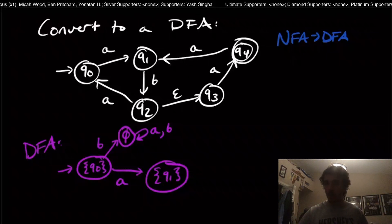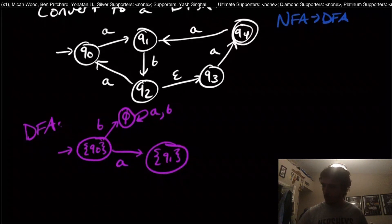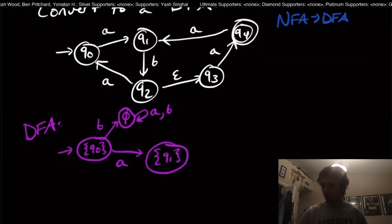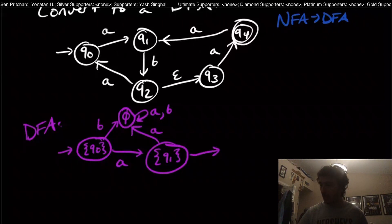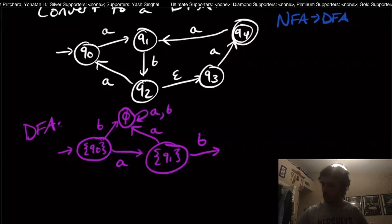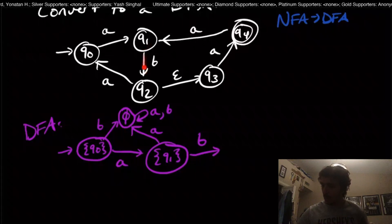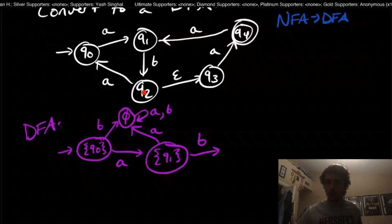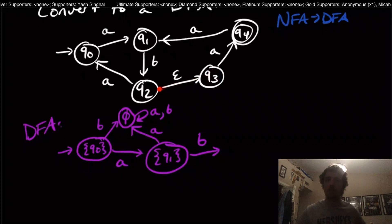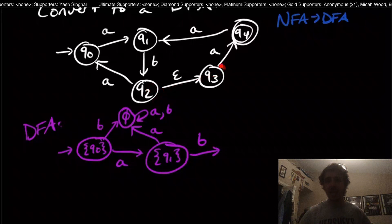Now we need to figure out where to go on input A and B from q1. q1 has no transitions on input A, so the A transition comes back to the dead state, just like before. The interesting part is the B transition. The B transition goes down to q2, but q2 can go to q3 because there's an epsilon transition there. So the epsilon closure of q2 is {q2, q3}, and the state we go to on B is {q2, q3}.